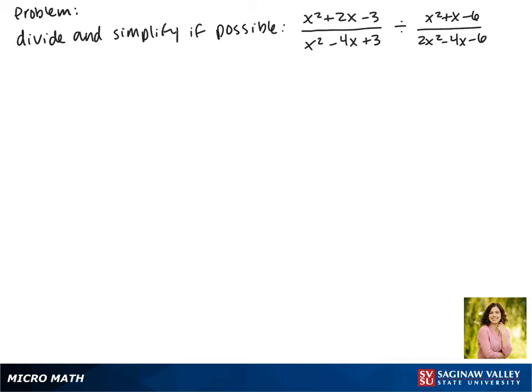Today we'll be dividing the expression x squared plus 2x minus 3 divided by x squared minus 4x plus 3, all divided by x squared plus x minus 6 divided by 2x squared minus 4x minus 6, and simplifying if possible.